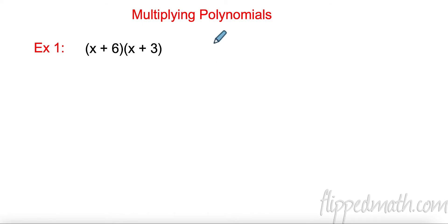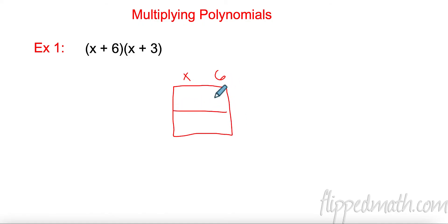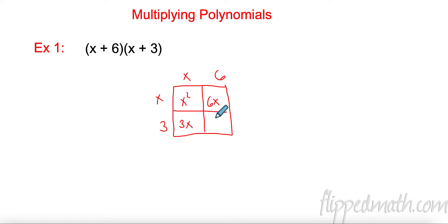The first thing — maybe this is review for you — we're going to do this with the box method. We're going to multiply these two things: a binomial times a binomial, a two-term thing with a two-term thing. So I have x and 6 in my box, and x plus 3 on the side. I multiply: x times x is x squared, x times 6 is 6x, 3 times x is 3x, and 3 times 6 is 18. Like terms are always diagonal, so I get x squared plus 9x plus 18.